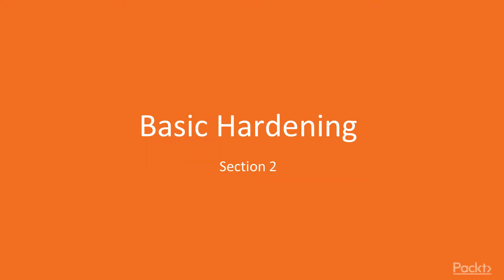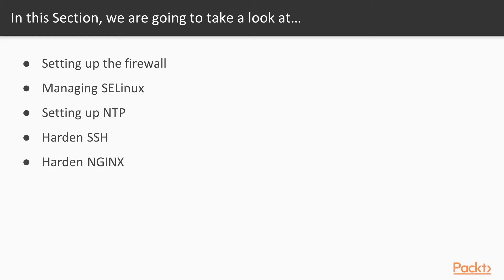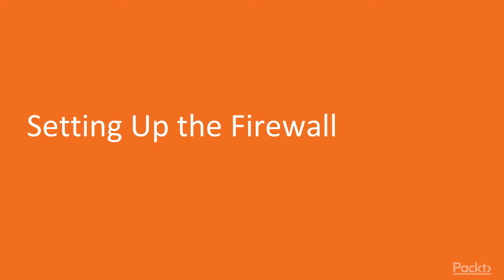Hello there, welcome back to section number two: getting started with Ansible security. In this section we are going to learn about basic hardening using Ansible, and it includes topics like setting up the firewall, managing SELinux, setup NTP, hardened SSH, and hardened SSH and NGINX. Let us jump on the first video of this section: setting up the firewall.